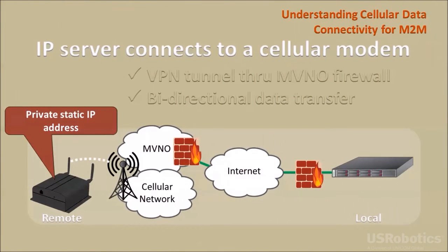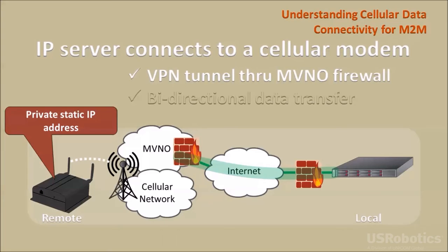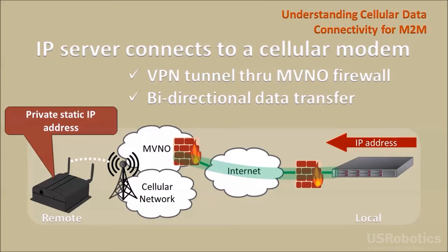Here is a solution that does not use a public IP address. A cellular service provider such as an MVNO that offers a private cellular data network can provision the cellular modem with a private static IP address. To allow the server to reach their private network, the cellular service provider must also configure a VPN that allows the server to tunnel through the MVNO firewall into the private network. Once the connection is made to the private IP address, data can transfer across the connection in either direction.